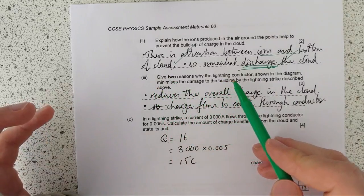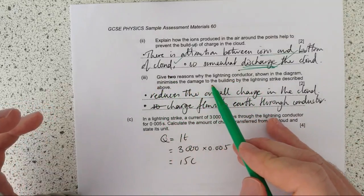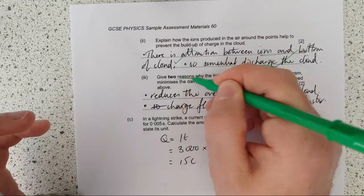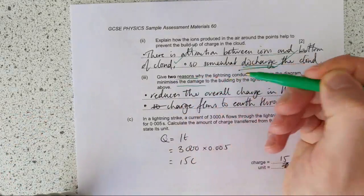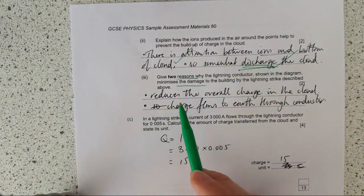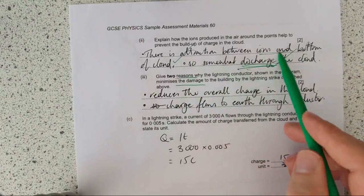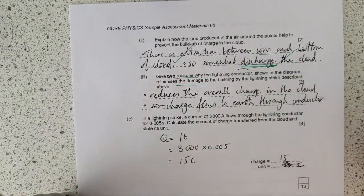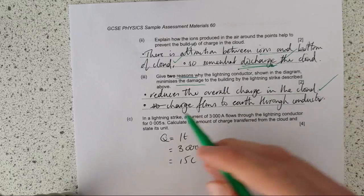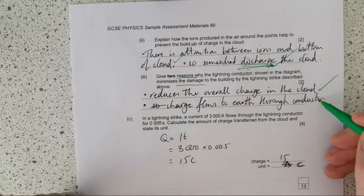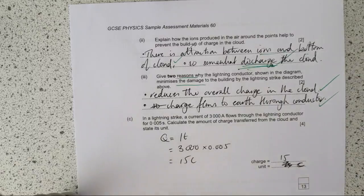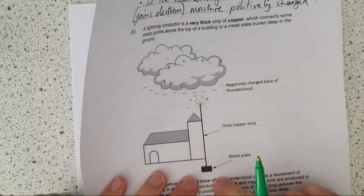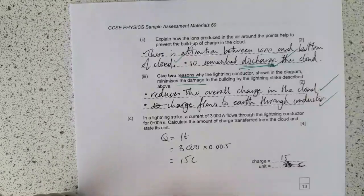So there's attraction between the ions and the bottom of the cloud, so this discharges the cloud, this is what we're really looking for, this idea of discharging here. Give two reasons why the lightning conductor is shown in the diagram minimizes the damage to the building. So what does it do? Well it discharges the cloud, so it reduces the overall charge in the cloud therefore it's going to be a lower current, and also charge through the conductor rather than through the building.